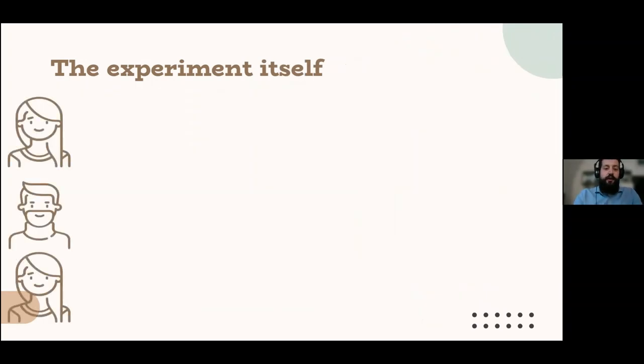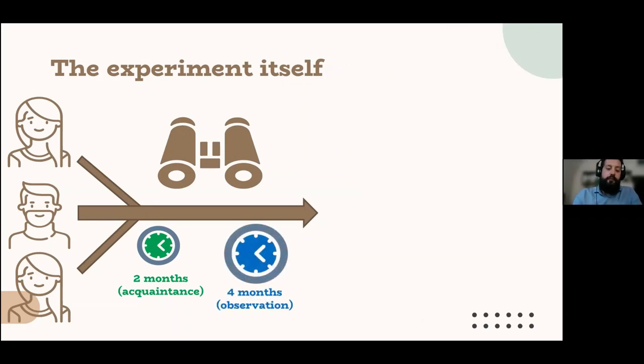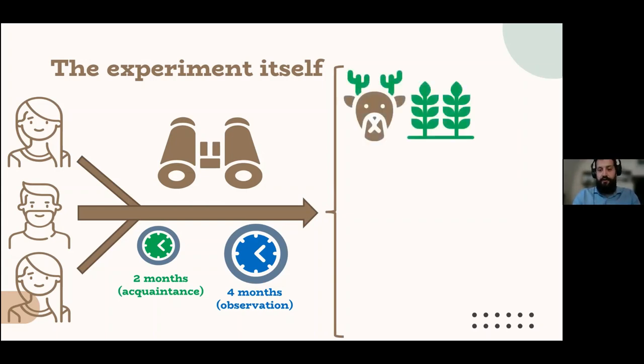Again, an overview on the experiment itself. Three volunteers conducted the observation for six months, of which two months were considered of acquaintance for them to get to know the individuals and to understand the different behaviors and to be able to work with them, and four months of actual observation. As I told you before, the observation was conducted across contexts. So we defined three different contexts of observation.